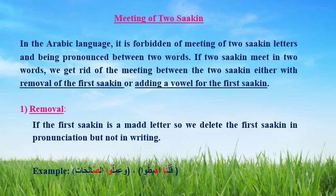The first way is removal. If the first sakin is a madda letter, we delete the first sakin in pronunciation but not in writing. For example, there is an alif before it — so this is considered a madda letter and it is the last letter in the word. The first letter in the next word is the haa, which is sakin. So we get rid of the meeting by removing the alif. In continuation, we pronounce them joined; in stopping, we pause on the first word.